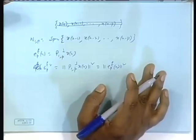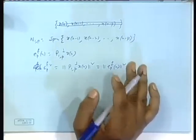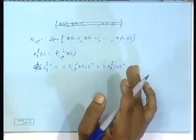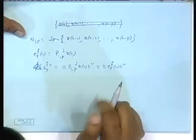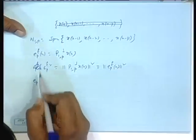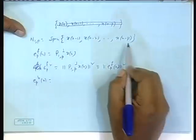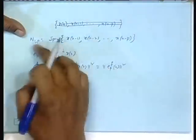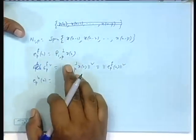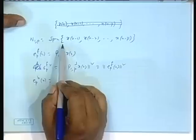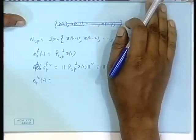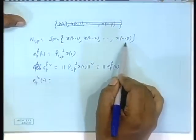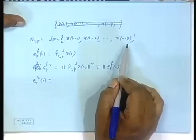The inner product of two random variables x and y is E[x y*] — correlation — so norm means variance. Similarly, for backward prediction we had E_p_b_n, where x_{n-p} was projected on the space spanned by x_n, x_{n-1} up to x_{n-p+1} — those are the p future terms if you are standing at the point n minus p.